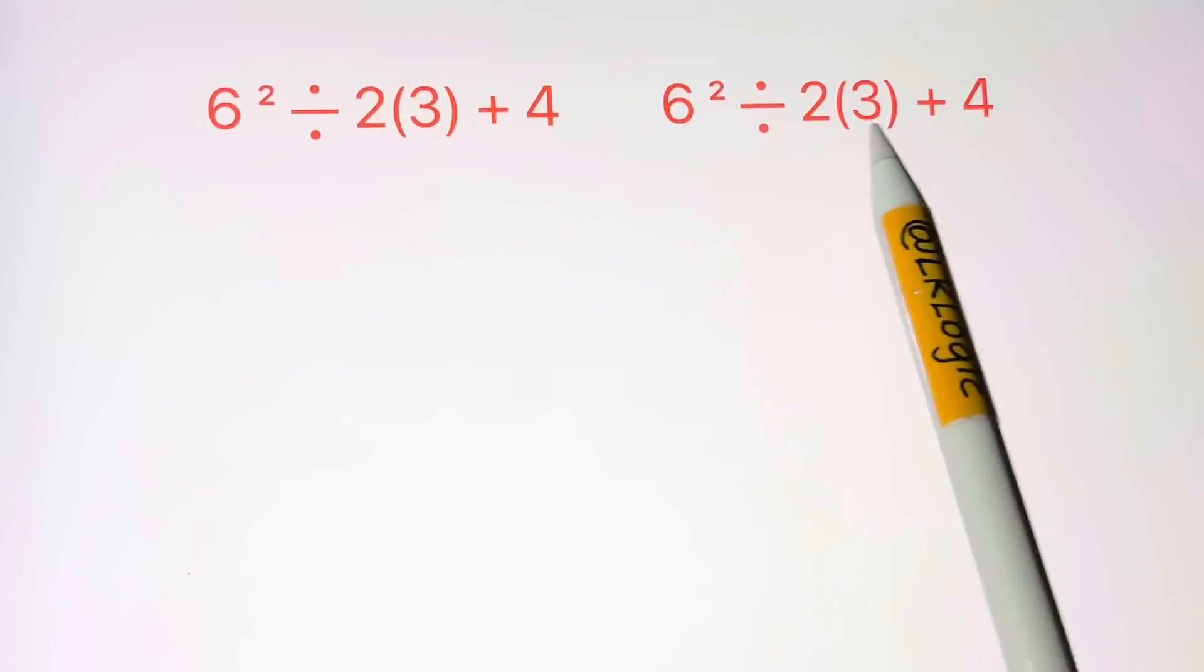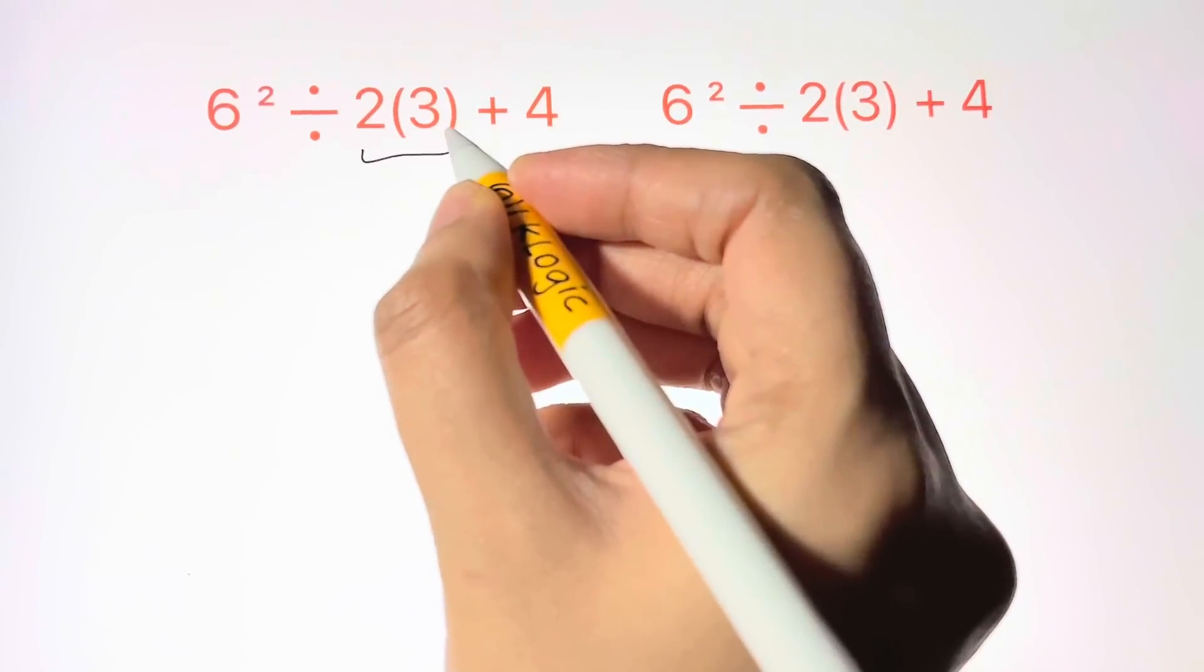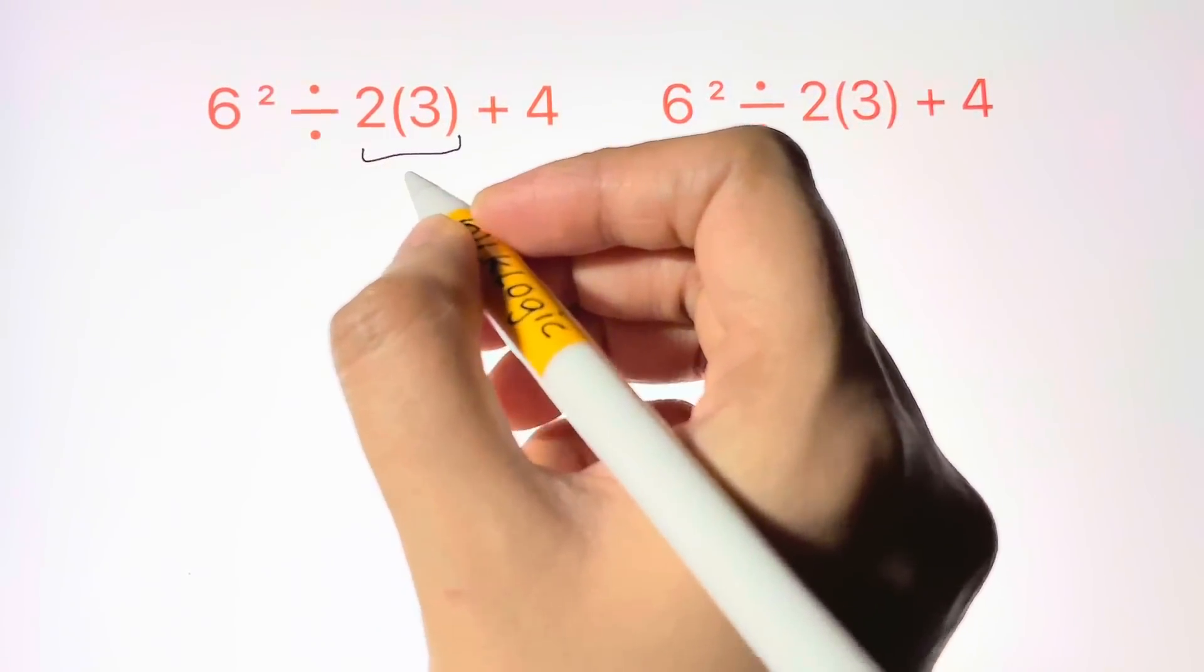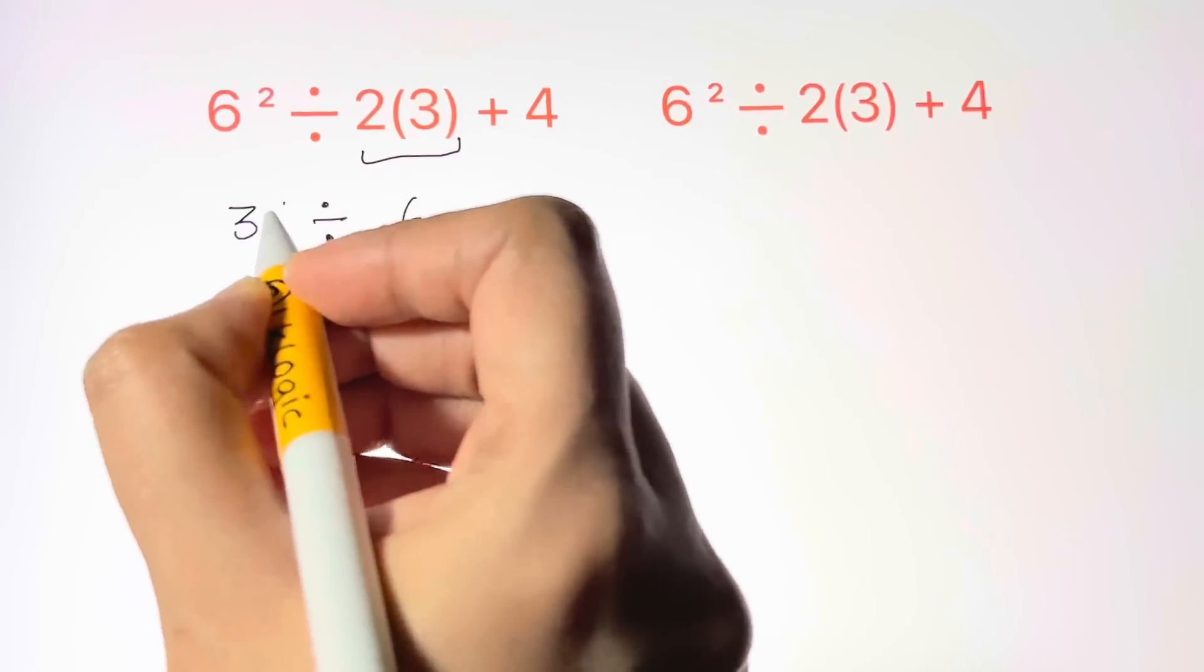Hi guys, we are going to solve this problem in two ways. The first is to multiply the parenthesis, that is 2 times 3, and that will give us 6. Then we solve the exponent, that is 6 squared.